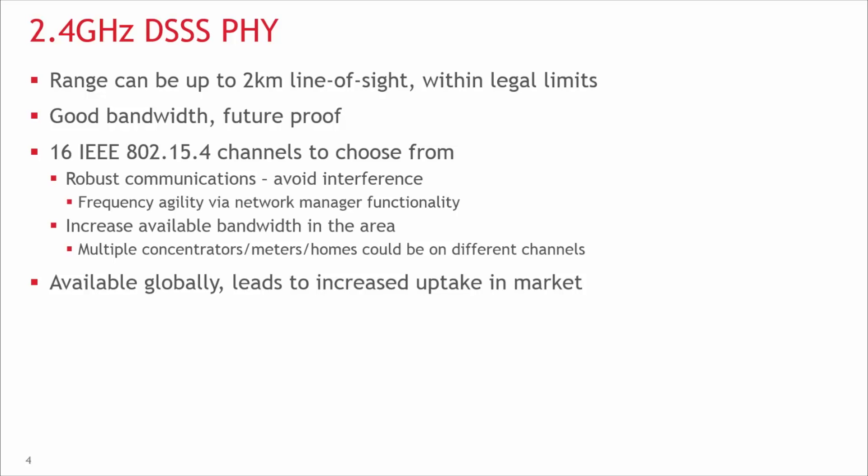Because of all the channels available, you have robust communications such that you can avoid interference by picking channels that are not terribly noisy. If you do pick a channel and it becomes noisy, Zigbee has a high-level response called frequency agility, so that a network manager can move the network to a different channel. The other advantage to the 2.4 GHz spectrum is that it's available globally, which means you have a wide install base for your products.